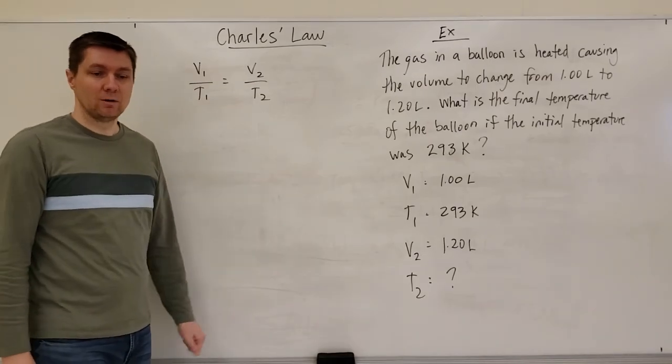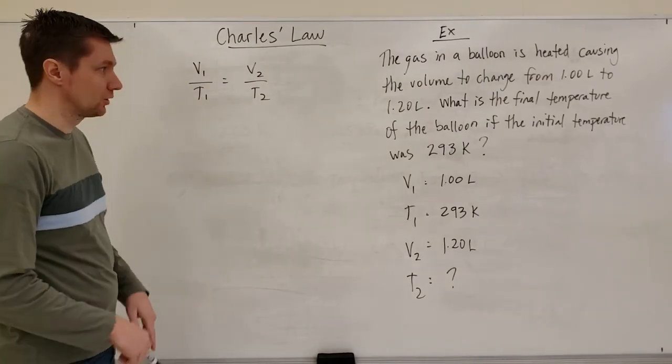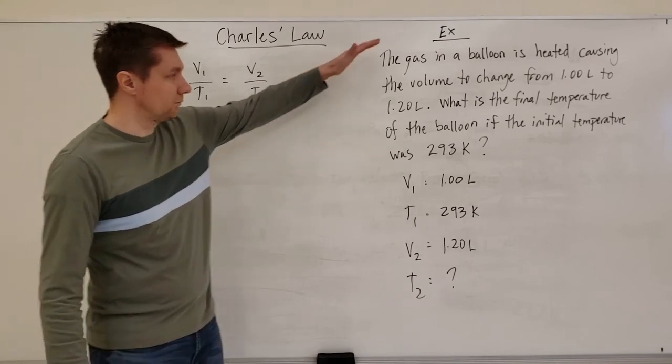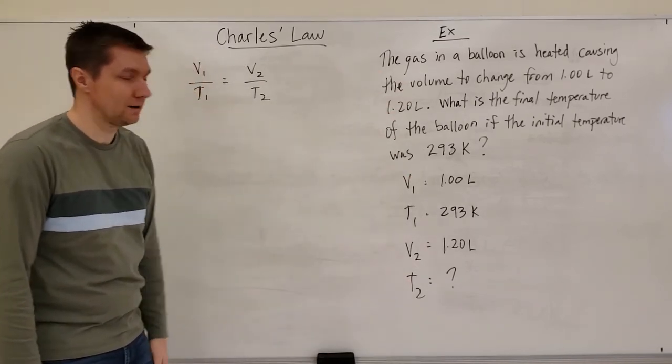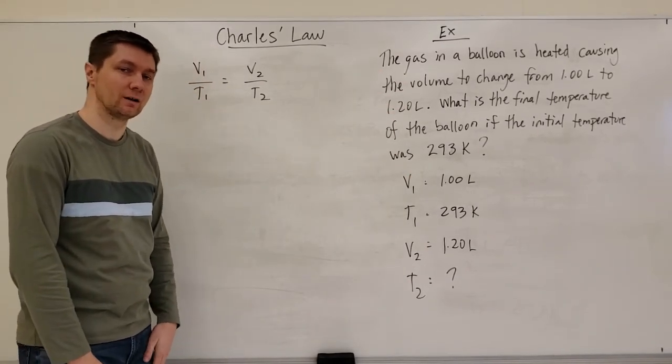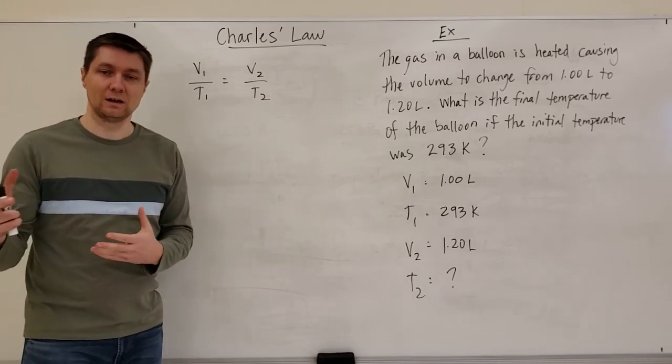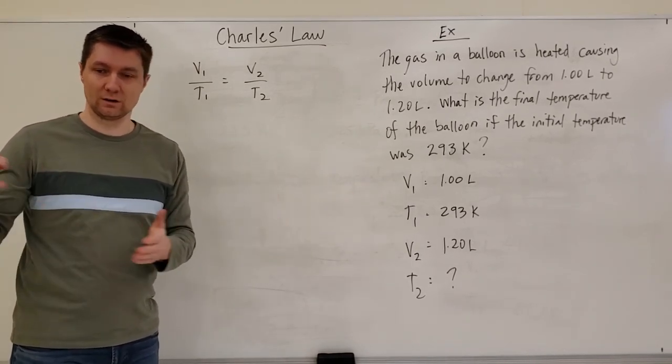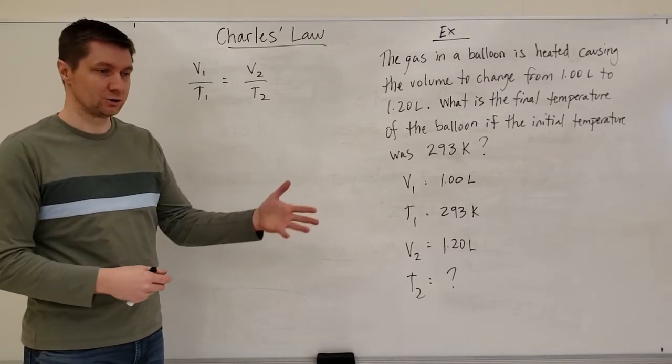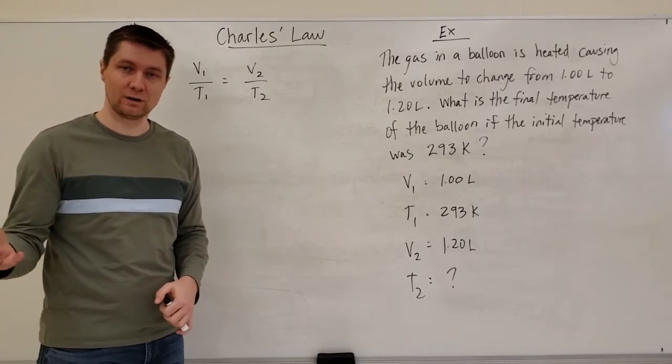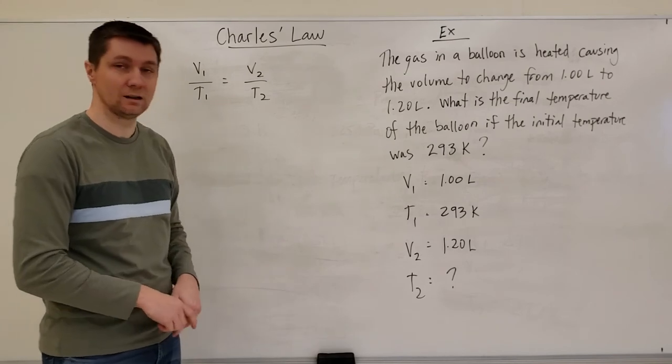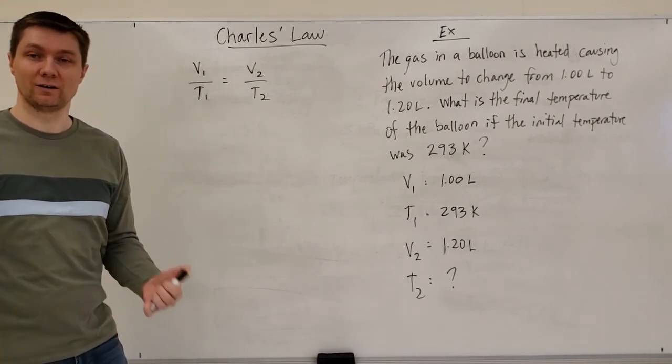Here's our last problem as it relates to Charles Law. You can see the problem is written out and I've identified all the numbers that go in there. What this is saying is you've got a balloon, you heat it up, it changes volume from 1 liter to 1.2 liters. The initial temperature of the gas was 20 degrees Celsius or 293 Kelvin. So what's the final temperature of the gas?